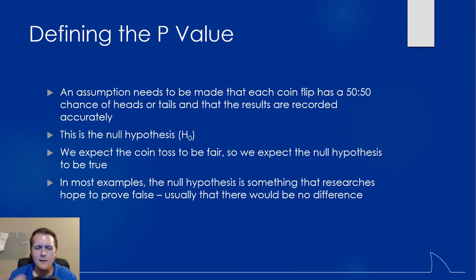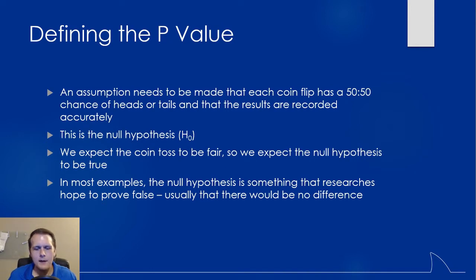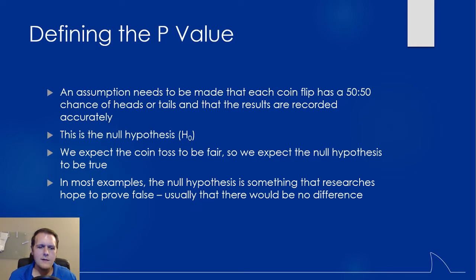This is our null hypothesis. We say there should be no difference between heads versus tails — you should be able to get either one 50-50. You're going to find that in most examples, the null hypothesis is something researchers are trying to prove false. Usually the null hypothesis says there's no difference between two things, and we're trying to say there is a difference. If I'm testing a new medication and I compare placebo to drug treatment, the null hypothesis would be that there's no difference between those two.